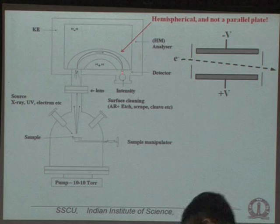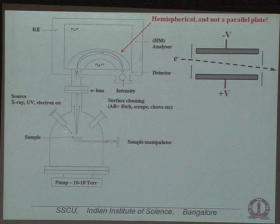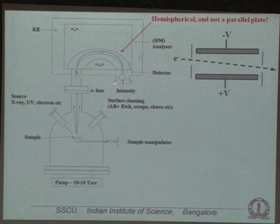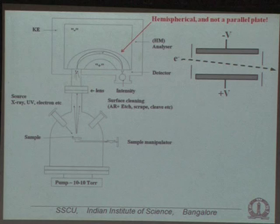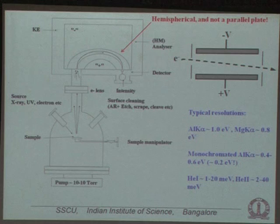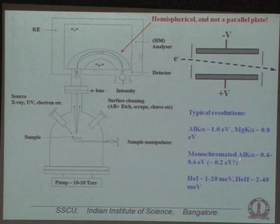A detector counts the electrons coming out with the selected kinetic energy. The sample is placed where the photon source illuminates it via the sample manipulator. Emitted electrons travel to an electron lens system that images the spot on the sample onto the entrance slit of the analyzer. The lens system is needed because the analyzer is physically distant from the sample. Typical resolutions: Al K-alpha unmonochromatized ~1 eV; monochromatized Al K-alpha ~0.2 eV; helium-1 resonance line down to sub-meV today.